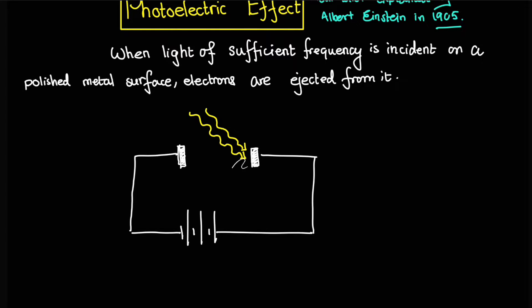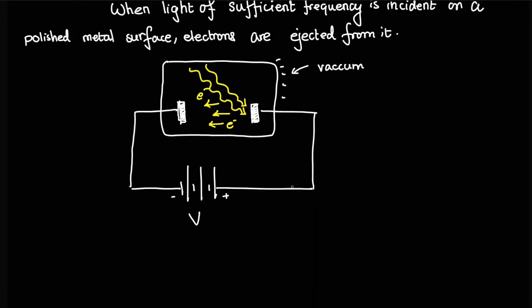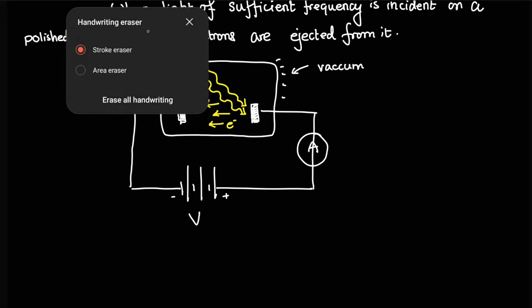In between these two polished metal surfaces, we let light of a certain frequency be incident on this metal surface. This is basically photons hitting this surface, and in between these two surfaces, we say that we let vacuum take over. When light is incident on this polished metal surface, electrons are ejected from it. Electrons fly off from this metal surface to this metal surface over here. We connect a battery, let this be phi, this is the positive and this is the negative, and we connect an ammeter over here.